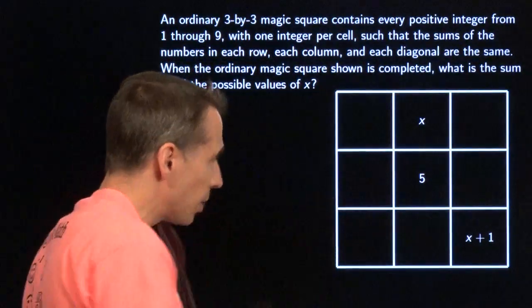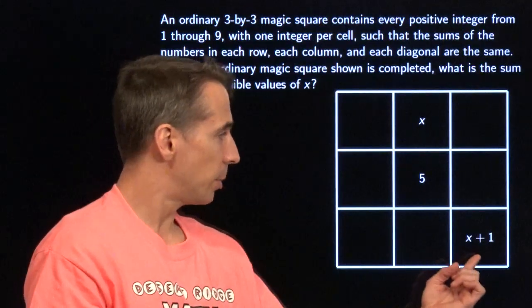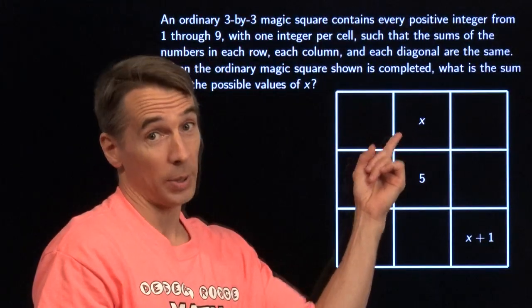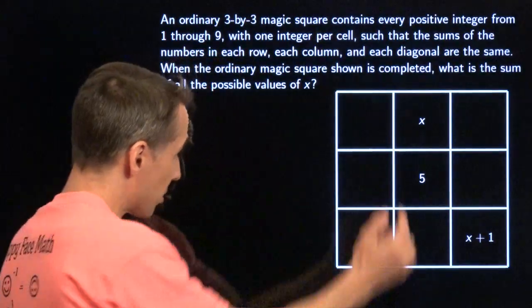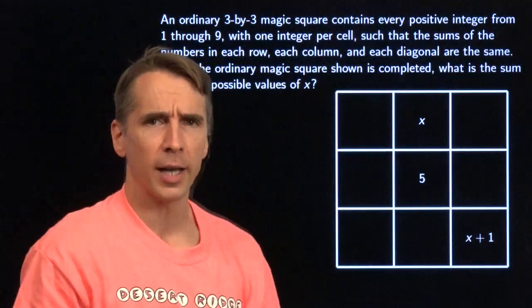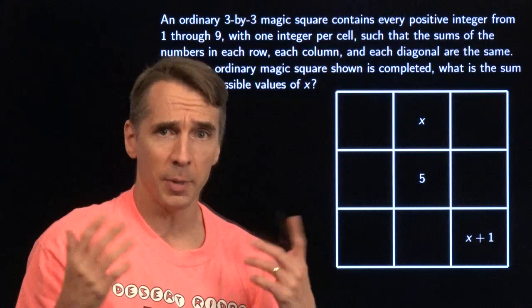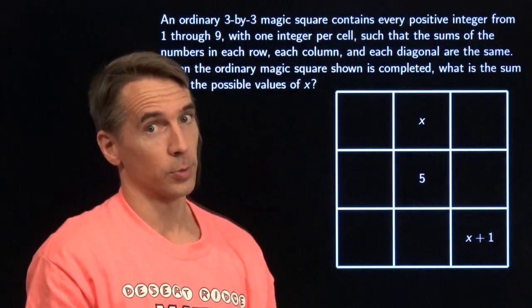Now, in this magic square, we're told that the middle number is 5, and the number down here is 1 more than the number up here, and we have to find the sum of all possible values of x, such that when we put in that value of x, we're still able to fill out this magic square according to all of these rules.